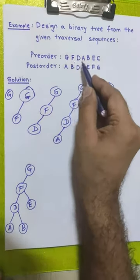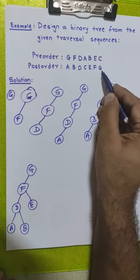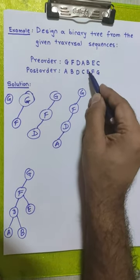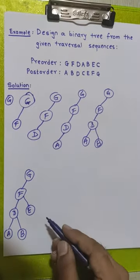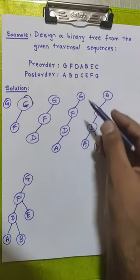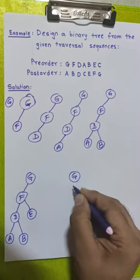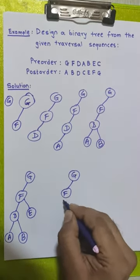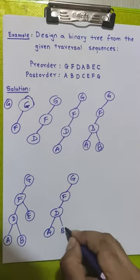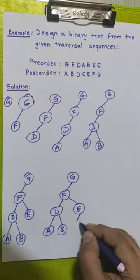We take the last element from pre-order: node C. We check the post-order sequence — node C appears immediately before node E, meaning it is part of node E's subtree. We check node E: both children are absent, so node C must be placed to the left-hand side of node E. We draw it in the diagram to the left of node E.